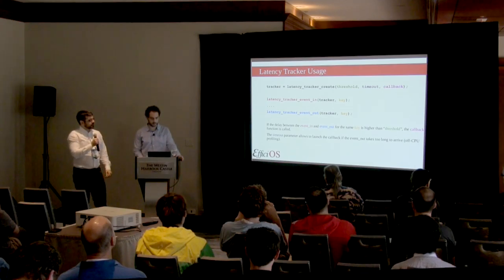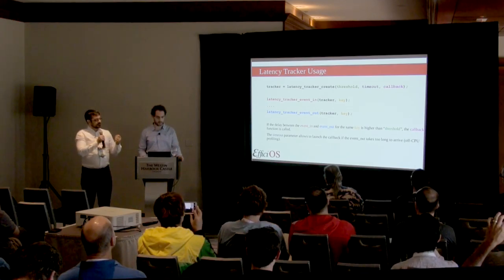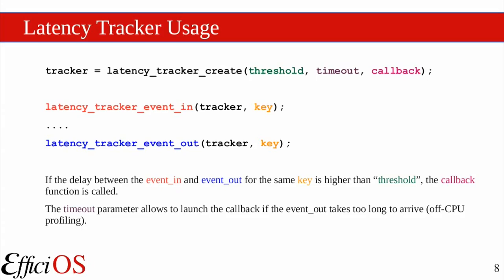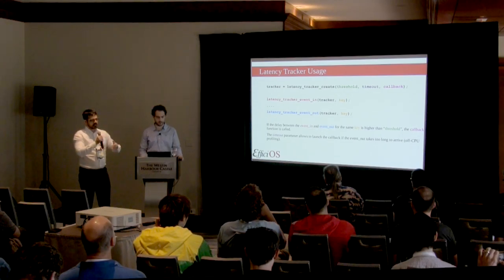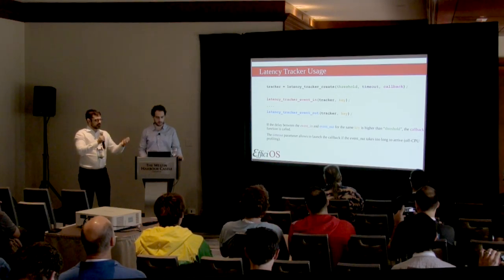The API is pretty simple. You can create a tracker specifying a threshold, a timeout, and a callback to call. Then you feed event-in and event-out calls from the instrumentation of your kernel, passing a tracker and a key that you specify. That key is used to match the in and out pairs, and it's used to calculate whether the threshold has been met and then call the callback.